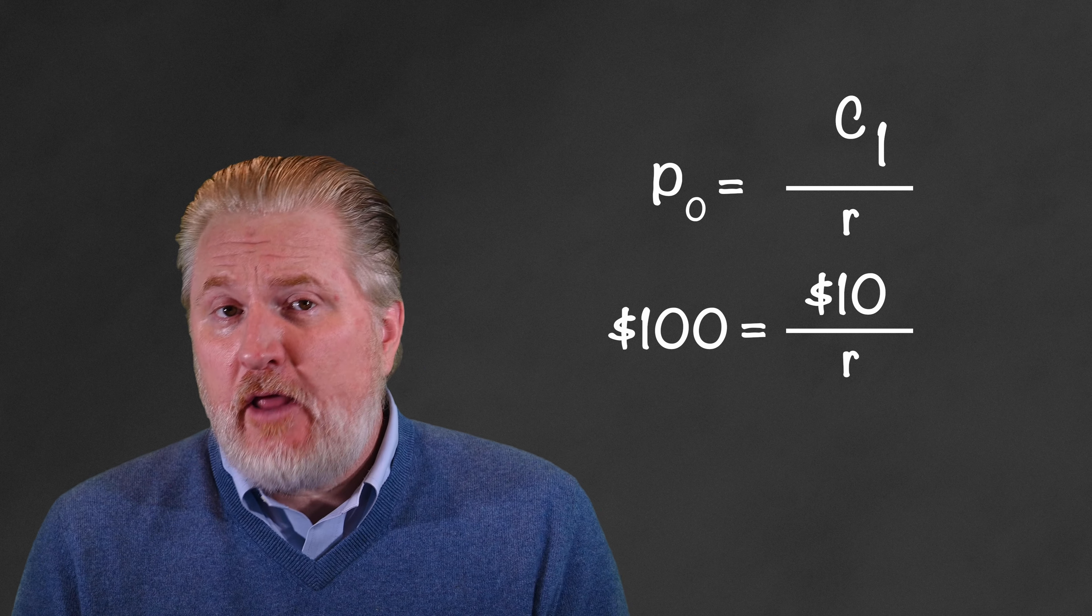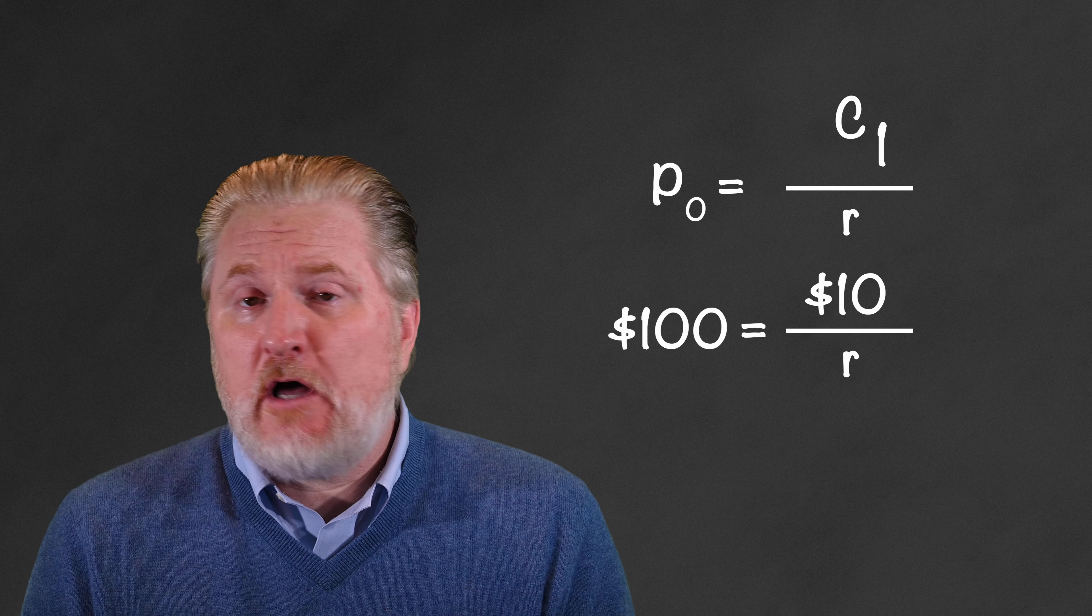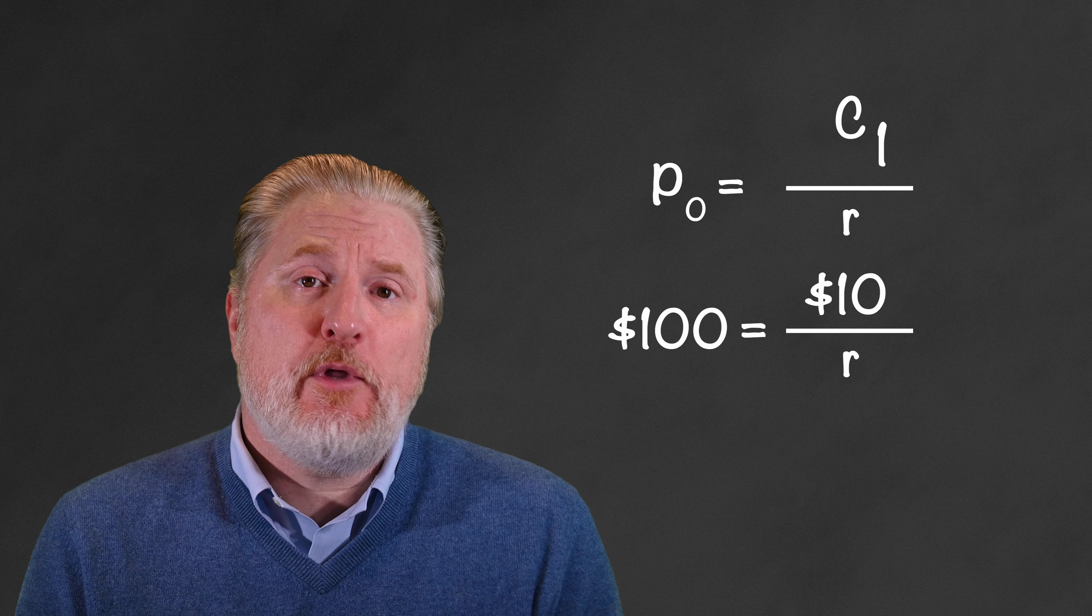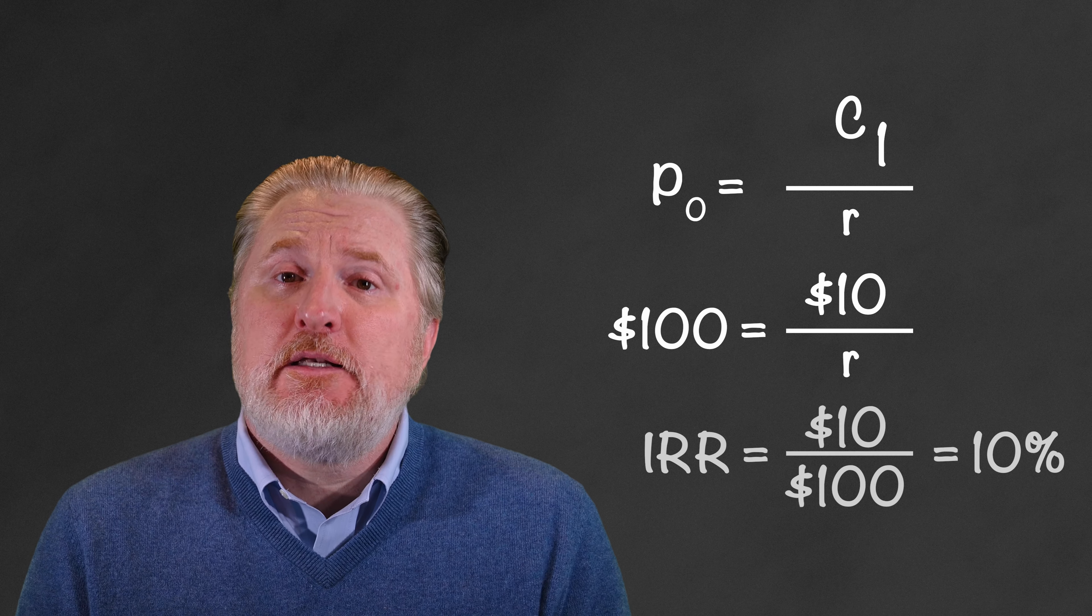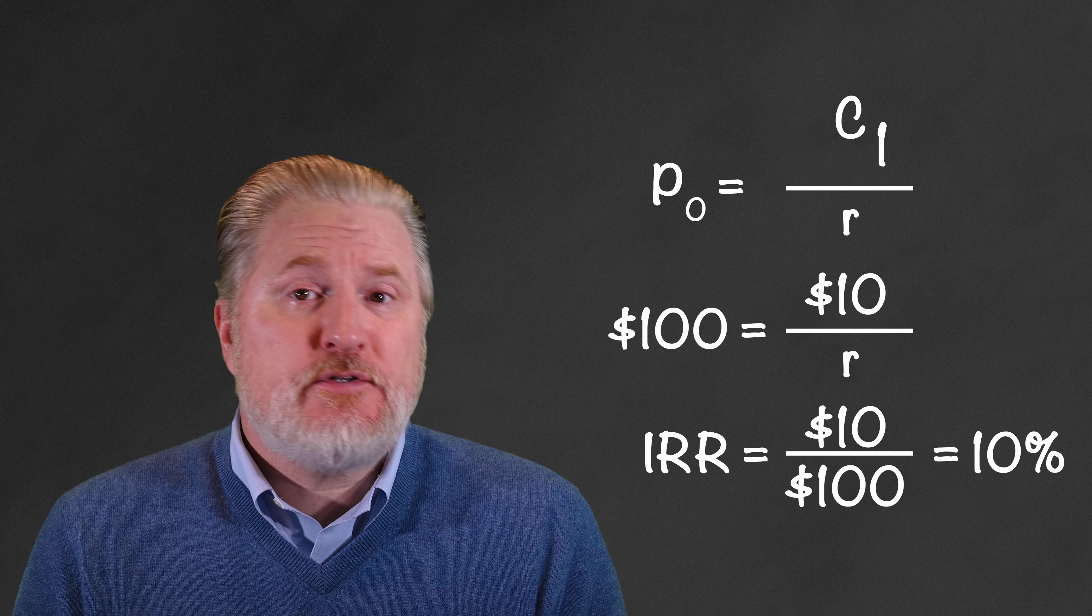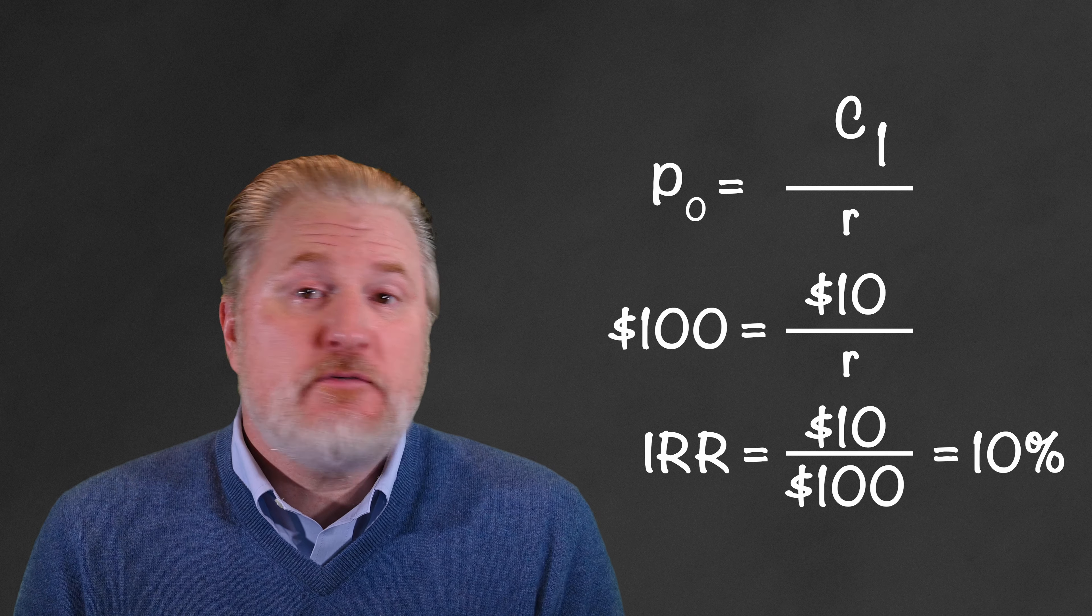$10, or that annual cash flow forever, divided by R is equal to $100. That's the price that we should be willing to pay for this particular perpetuity. Rearranged, $10 divided by $100 is equal to R. So the IRR is 10%.